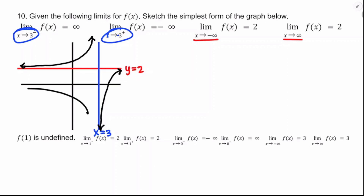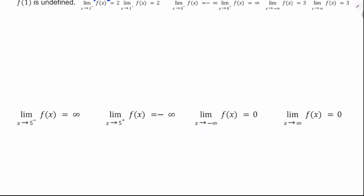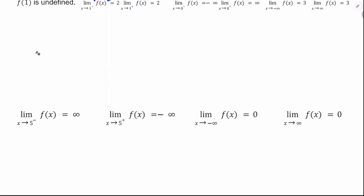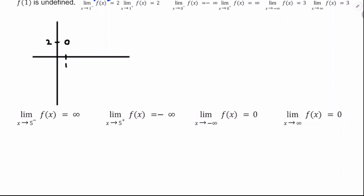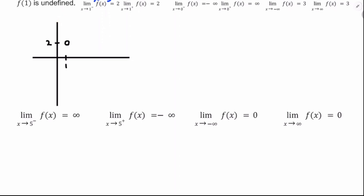It can't go over here because then it wouldn't be a function. For the next sketch: f of 1 is undefined, but the limit as x approaches 1 equals 2 from both sides — so there's a hole in the graph of f at x equals 1, at coordinates (1, 2). As x approaches 0 from either side, there are infinities, so that's a vertical asymptote.